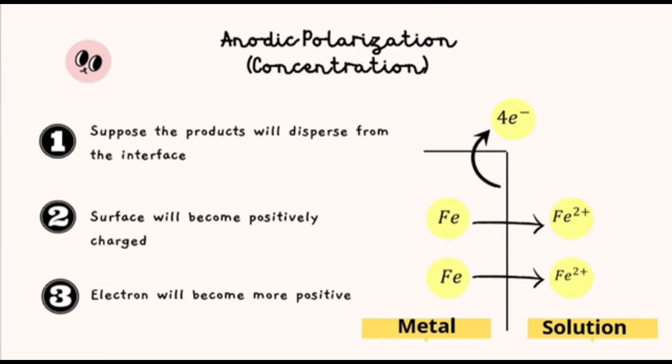Anodic polarization, concentration. It is believed that the products will gradually disperse away from the interface. The surface will become more positively charged here as well. Because of the concentration polarization, the electron will become more positive.